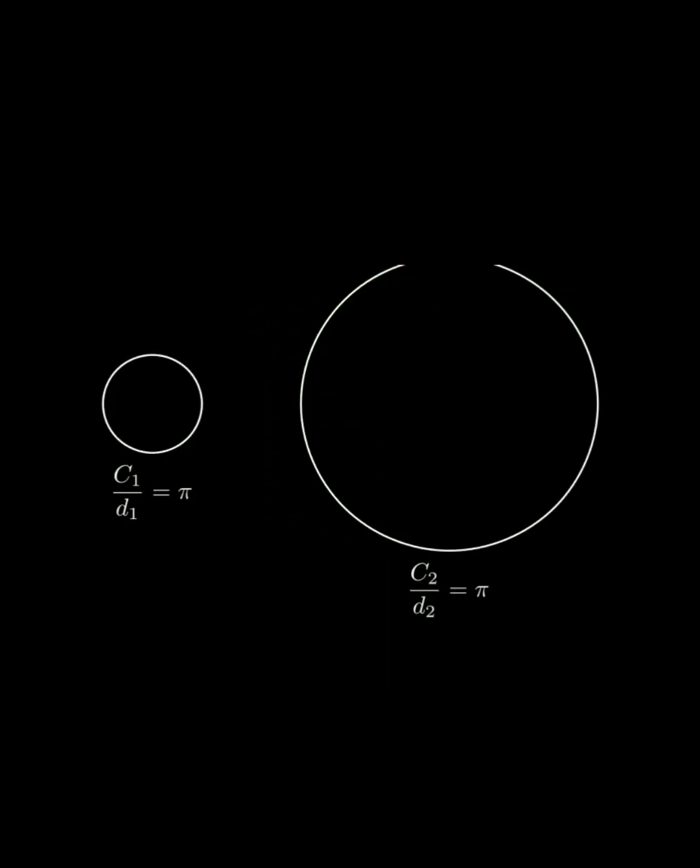If we divide the circumference by the diameter of any circle, we always get π, which is approximately 3.14. This is true for circles of any size.